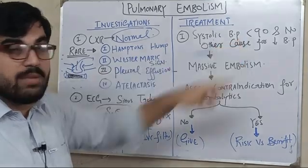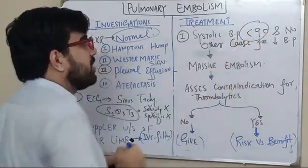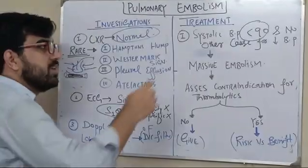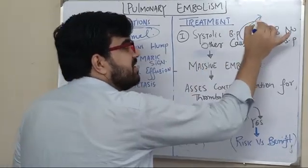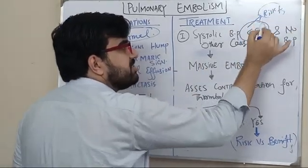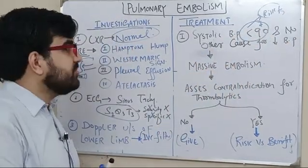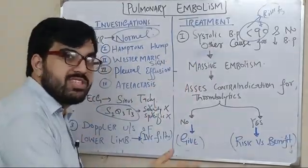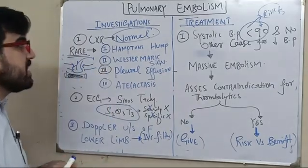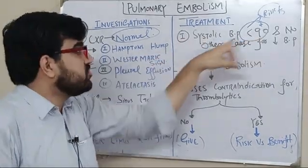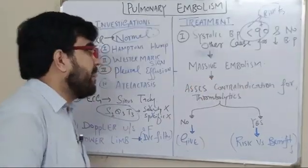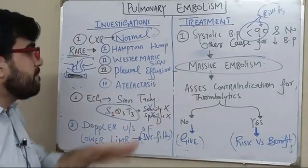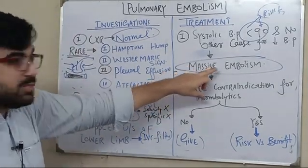If the patient is not maintaining systolic BP and there is no other cause for the low BP — this is the key point: you must confirm no other cause exists before attributing the hypotension to pulmonary embolism, otherwise you are wrongly diagnosing and managing the patient. If systolic BP is less than 90 and there is no other cause for low BP, this is massive pulmonary embolism.